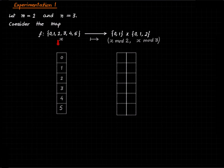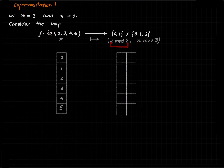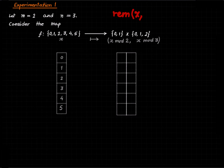What is this map? This map takes x as input and outputs a pair where the first entry is the remainder of x modulo 2. When I write x mod 2, I mean the remainder of x when you divide it by 2. It's not a great notation — we could say rem(x, 2) or something — but any exposition uses this notation, so it's fine. Similarly, x mod 3 denotes the remainder of x modulo 3.